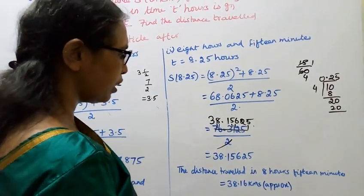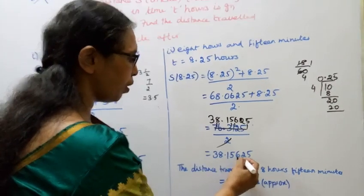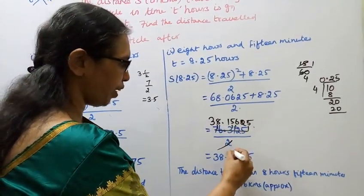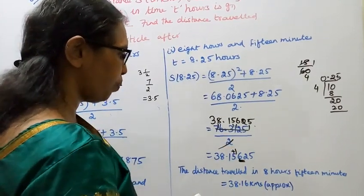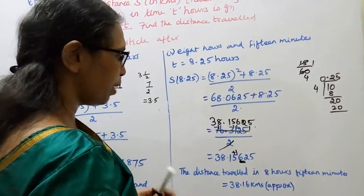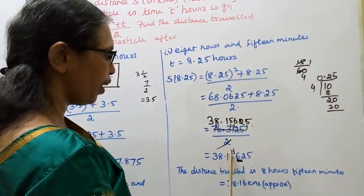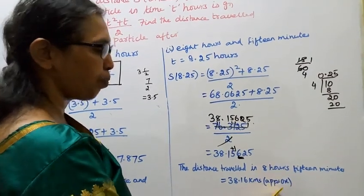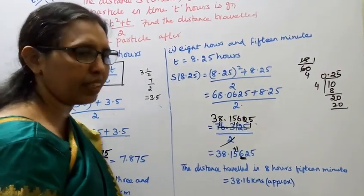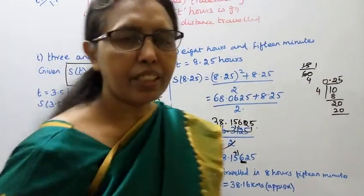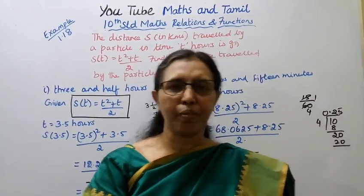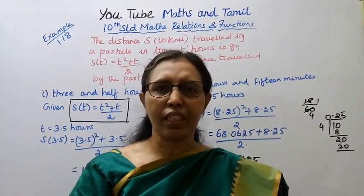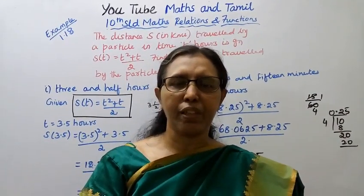Looking at the 3rd decimal place — it is 5 or more than 5, so we add 1. 38.15 plus 1 gives 38.16 kilometers approximately. This channel helps you to get 100 marks. Please subscribe to the channel, like the videos, and click on the bell button.